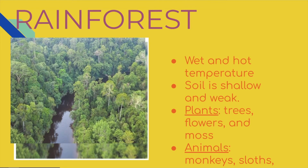The first environment we have is a rainforest. A rainforest is a tropical environment. It is very wet because it's very rainy, but it is also very hot in temperature. The soil is very weak since it's at the ground level of all the trees, and it's very hard for the sun to reach it, so the soil is very shallow and weak. One of the organisms we find in a rainforest is lots and lots of trees, as well as flowers and moss. Some animals that we find in a rainforest include monkeys, sloths, jaguars, and different types of birds.